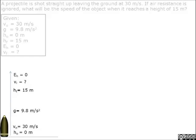Here in a diagram, we indicate that this projectile is leaving from the ground, so the initial height is 0 meters. It's shot straight up with a velocity of 30 meters per second. So when it reaches a height of 15 meters, what will be the velocity?